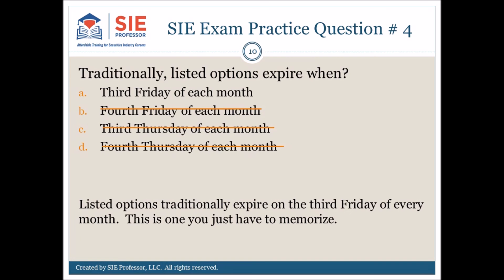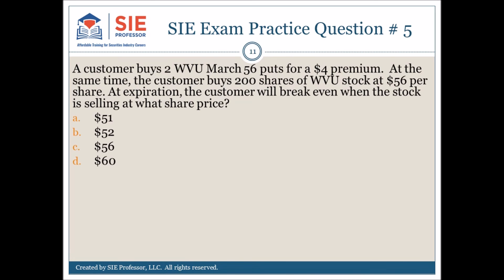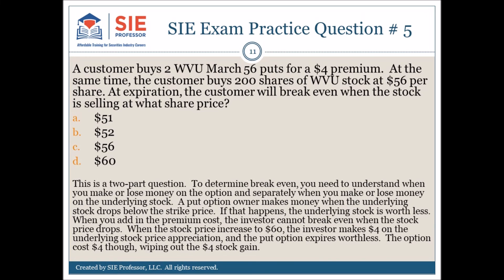SIE exam practice question number 5 answer. This is a two-part question. To determine break even, you need to understand when you make or lose money on the option and separately when you make or lose money on the underlying stock. A put option owner makes money when the underlying stock drops below the strike price. If that happens, the underlying stock is worth less. When you add in the premium cost, the investor cannot break even when the stock price drops. When the stock price increases to $60, the investor makes $4 on the underlying stock price appreciation and the put option expires worthless. The option costs $4 though, wiping out the $4 gain on the stock. That makes the answer D.